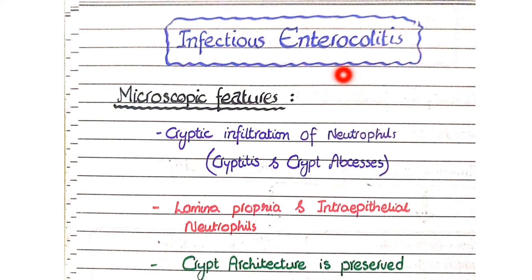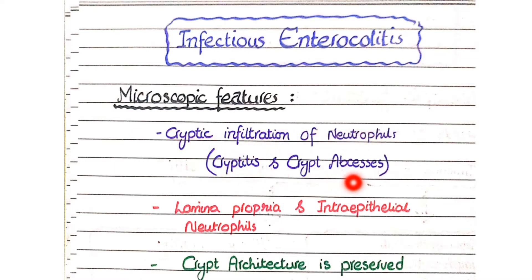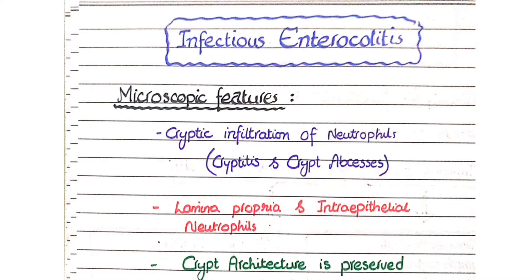The microscopic features are: cryptic infiltration of neutrophils, visible as cryptitis or crypt abscesses; neutrophils in the lamina propria and intraepithelial; and third, crypt architecture is preserved.